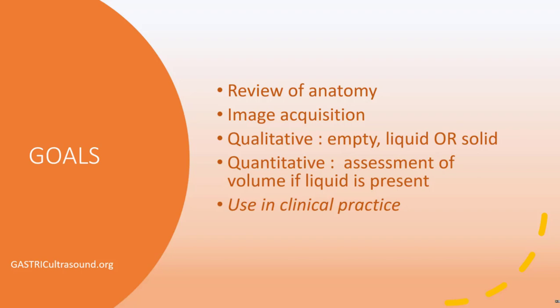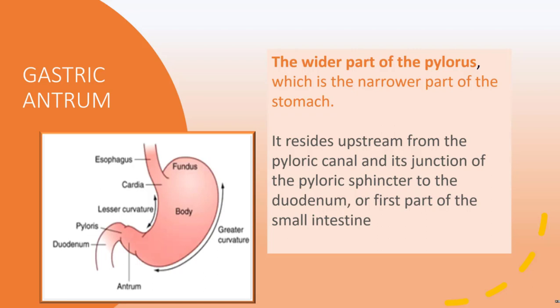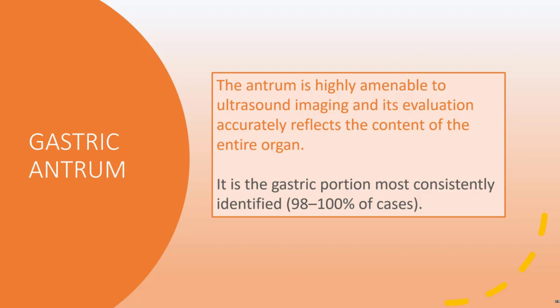What are we looking at when we do gastric ultrasound? We are looking at the gastric antrum. It is the wider part of the pylorus, which is the narrower part of the stomach, just upstream from the pyloric canal, and the junction of the pyloric sphincter to the duodenum. The antrum is very visible and easily identified — in most patients we can see it in 98 to 100% of cases — and it does accurately reflect the content of the stomach as a whole.